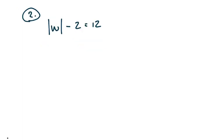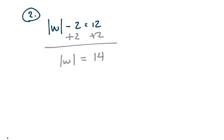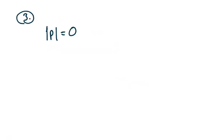Number two — we've added some stuff around the absolute value function, and that's what you'll see predominantly. The name of the game is always to get the absolute value function by itself. So we get the absolute value of w equals 14, and then we say w equals 14 or negative 14.